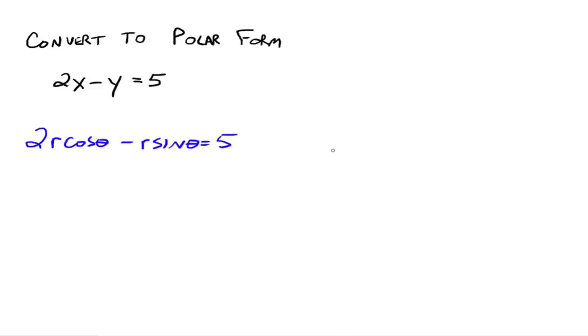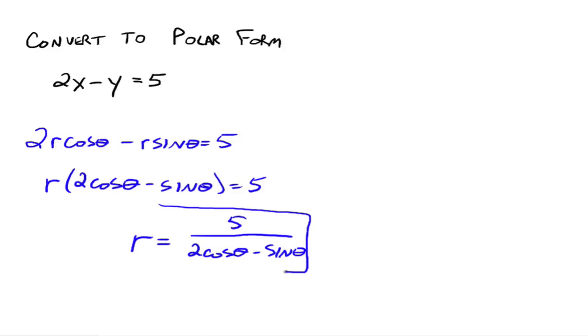we know what X and Y represent. So this would be 2 times R cosine theta minus R sine theta equals 5. Now, just like before with rectangular equations where we typically try to write them as functions and have Y in terms of X when we could, it's the same idea here. I'm going to encourage you to write R in terms of theta. Now, what that means is isolate R. So to do that, we take an R out, then divide both sides, and you get the polar equation.